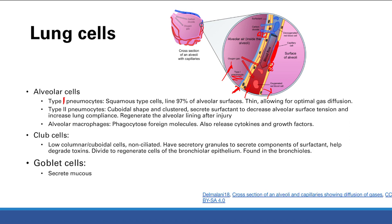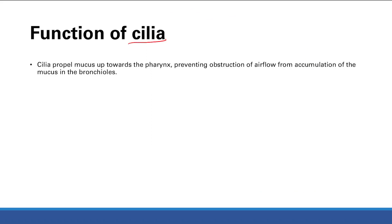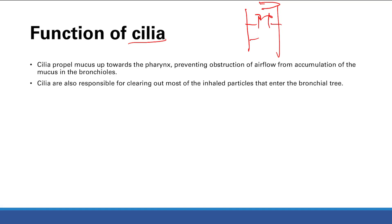Goblet cells, found in the trachea, bronchi, and bronchioles, secrete mucus. Cilia go from the trachea all the way to the terminal bronchioles and propel mucus up toward the pharynx. This is important — without cilia clearing the mucus made by goblet cells, it would accumulate and obstruct the airways. Cilia also clear out most of the inhaled particles that enter the bronchial tree, which get trapped in mucus and swept out.